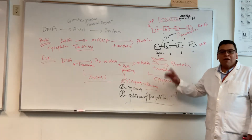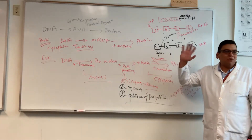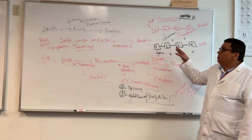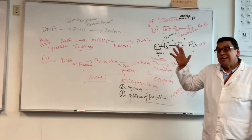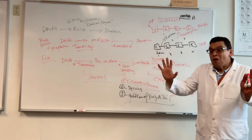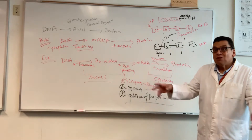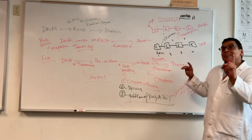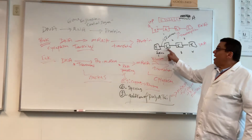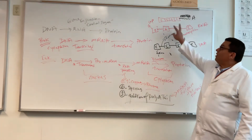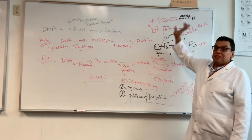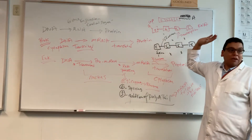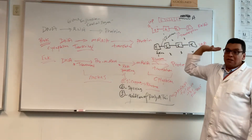The cap tells the ribosome it needs to translate this mRNA. Splicing removes intervening sequences that would otherwise make no sense. For example, if this gene encodes catalase, catalase is produced when the exons are joined together. With the introns still present, you don't get catalase.